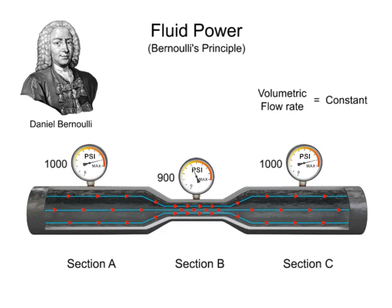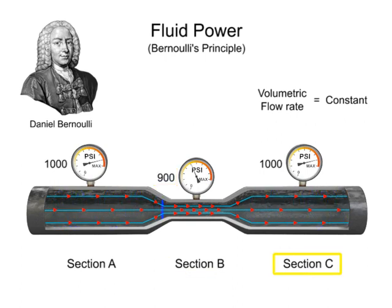This rule can also apply to the types of energy present in the system. As the pressure decreases in section B, the potential energy converts into kinetic energy, which increases the speed of water flow and decreases the pressure. When the water reaches section C, the kinetic energy is converted back to potential energy, illustrated by the decrease in speed of the water flow and its simultaneous increase in pressure.